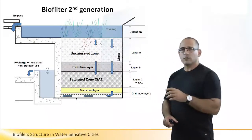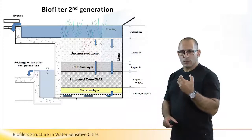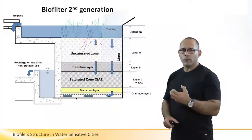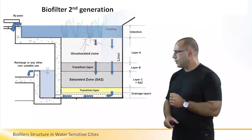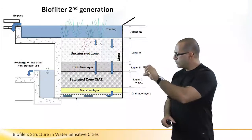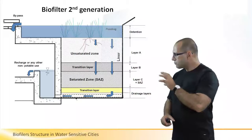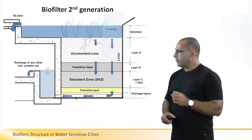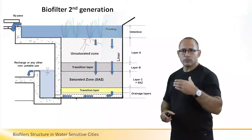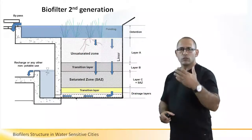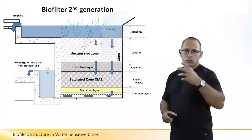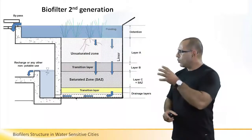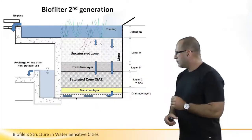In the top level, aerobic processes take place, while the bottom layers are more anaerobic where nitrate can be removed. Water comes from the mains to the top of the biofilter, and there is enough space for water to accumulate, allowing detention of water. Excess water overflows towards the conventional drainage system without treatment, and the water starts to infiltrate downward through the layers.